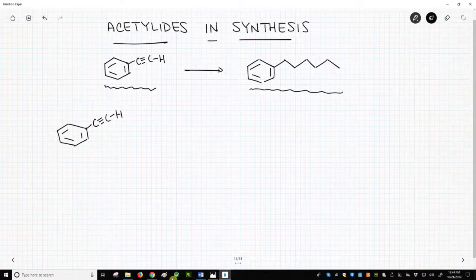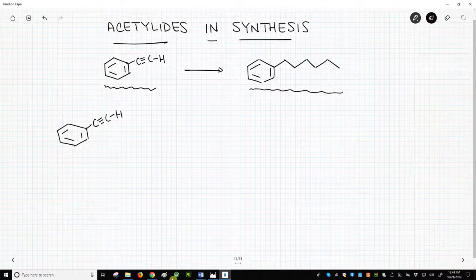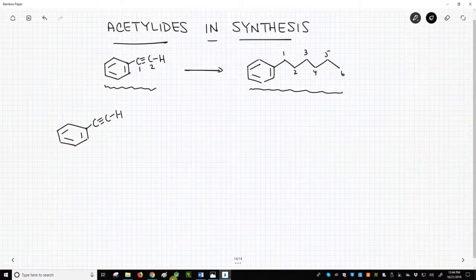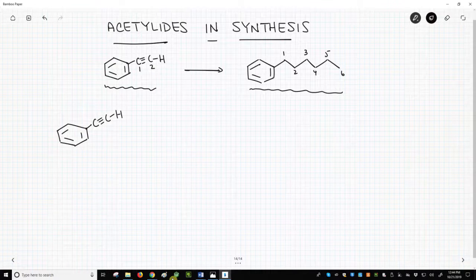Well, let's start by counting our carbons. The product has four more carbons coming off of the benzene ring than the starter material. We need to add those carbons. We also need to convert the alkyne into an alkane. That will require an addition of hydrogen. So those are our steps.